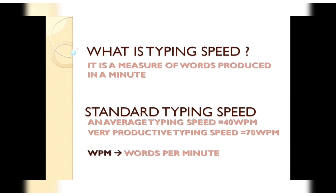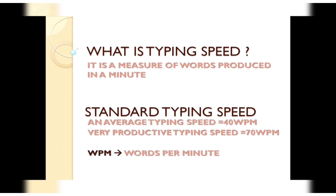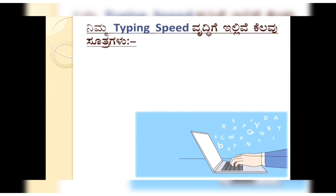It is very simple to measure the typing speed — the typing speed is measured per one minute. We are differentiating the average productive speed and the WPM is measured per one minute.